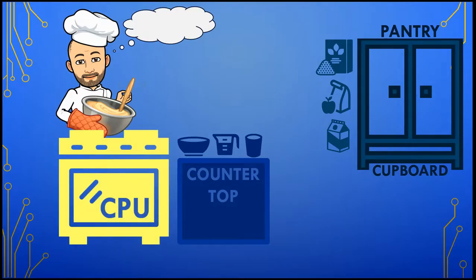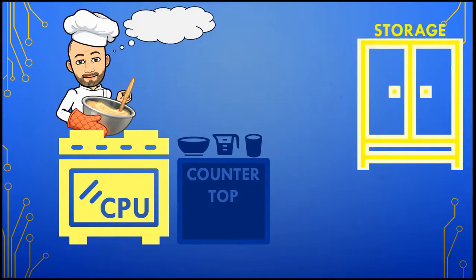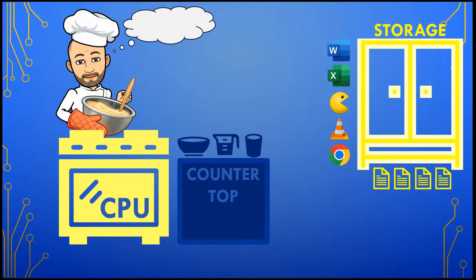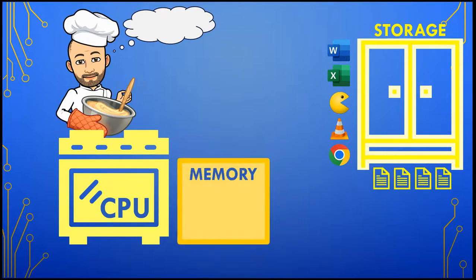The pantry cupboard is the same as our storage — it keeps all the programs that you want on your computer, like Word or Excel or even games, as well as all the files that we work on. The countertop is what you would consider as memory — it has the programs and files that we are currently working on, like playing a song.